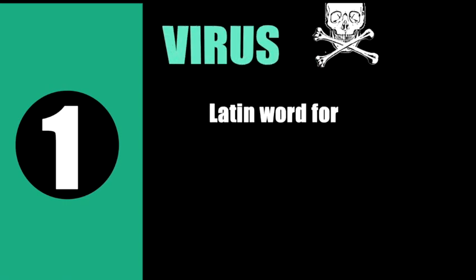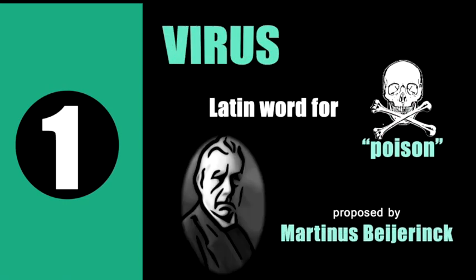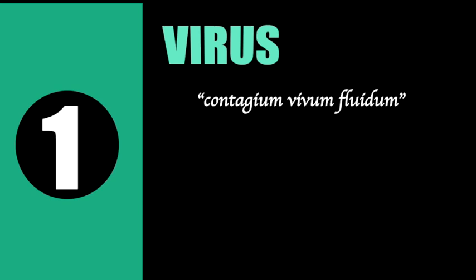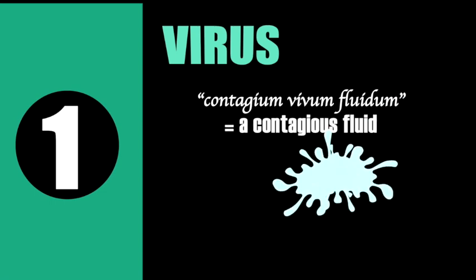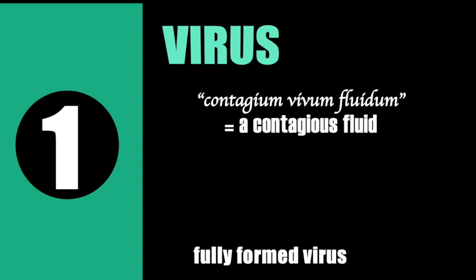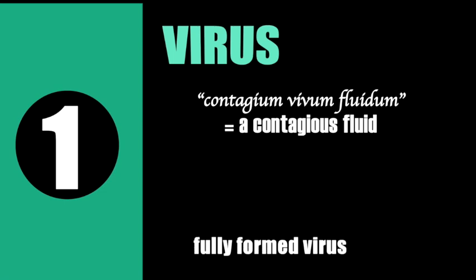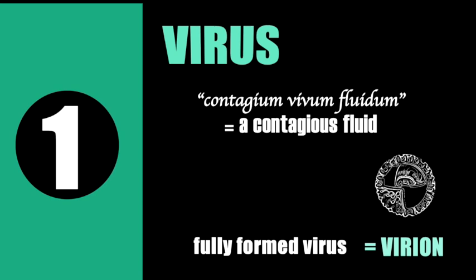Number 1. The Latin word virus, which means poison, was proposed by a Dutch microbiologist, Martinus Beijerinck, to denote the infective properties of these agents. For a long time, a virus was referred to as contagium vivum fluidum, meaning a contagious fluid. A fully formed virus outside the cell that is able to infect and establish itself in a host is called a virion.